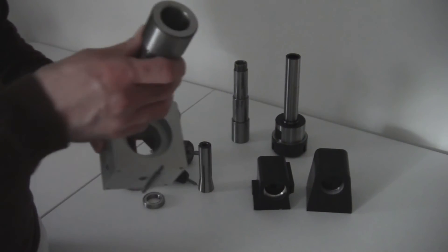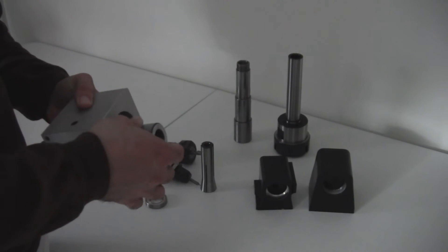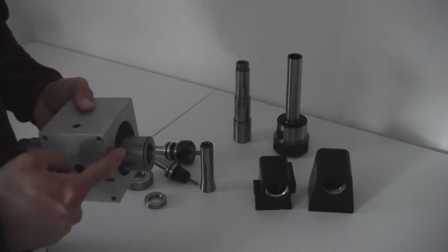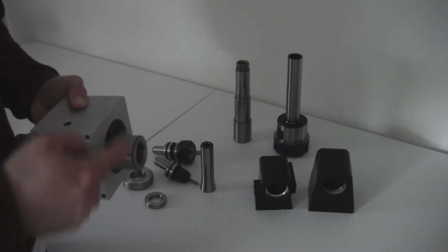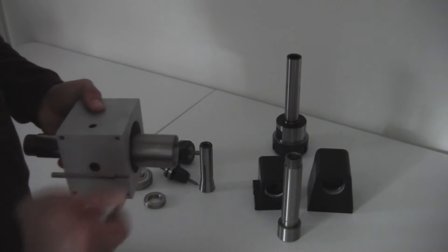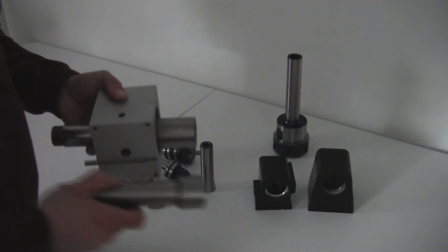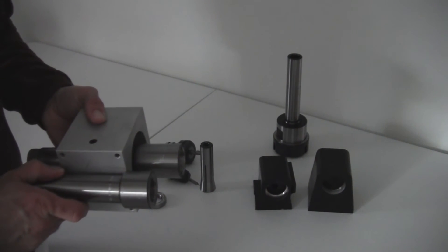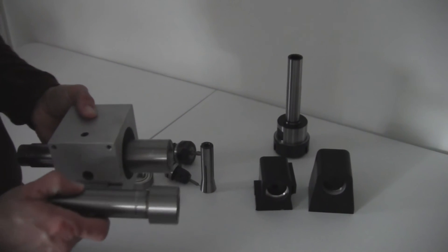The advantage of the MT3 is it fits so close to where the bearing is that gives you more rigidity. The R8 version has a little more stick out on it, which means you're going to lose a little bit of rigidity in there because it sticks out farther from the bearing.